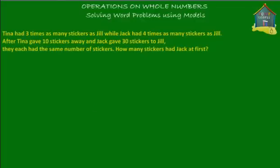It says that Tina had three times as many stickers as Jill, and Jack had four times as many stickers as Jill. After Tina gave 10 stickers away and Jack gave 30 stickers to Jill, they each had the same number of stickers. Find how many stickers Jack had at first.